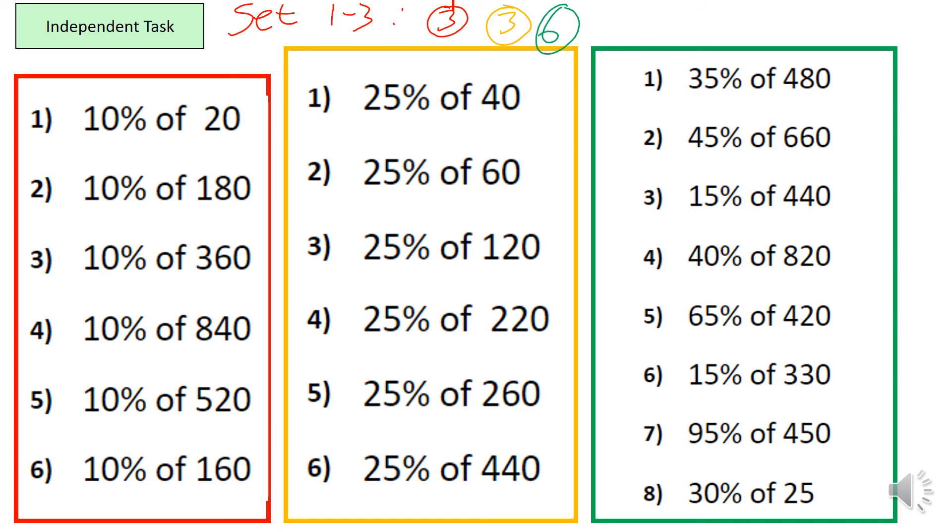And if you are in sets 4 to 6, can you do 4 from red, 4 from amber, and can you do 2 from green?